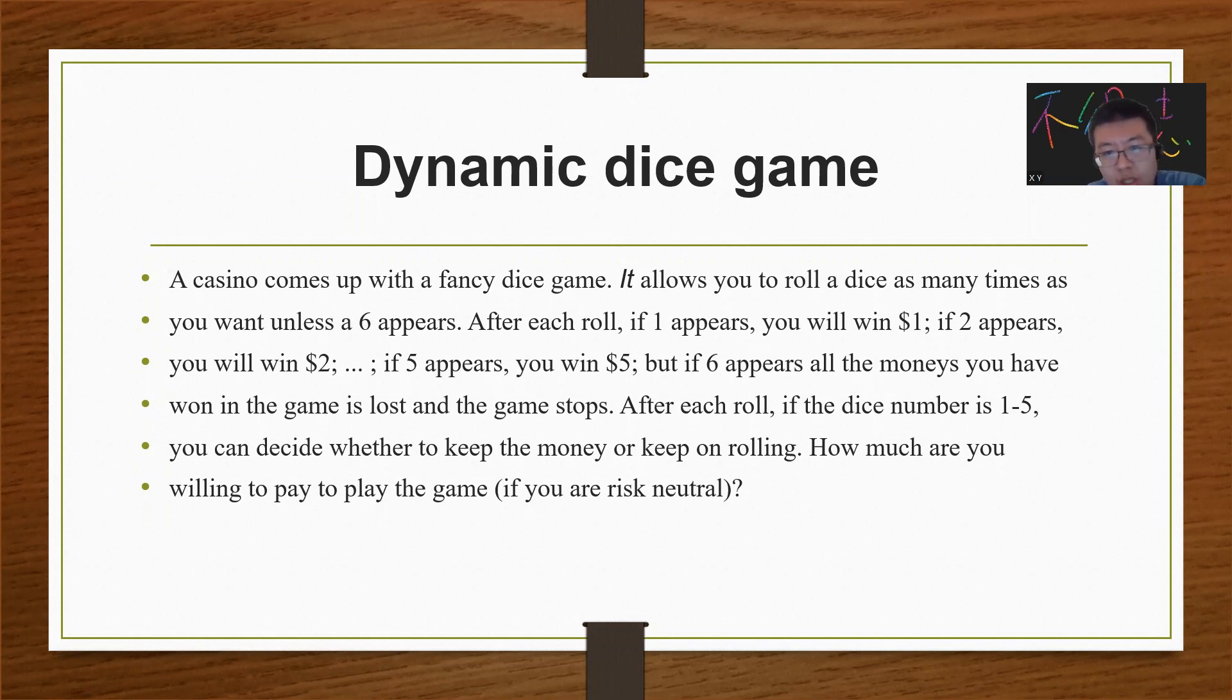If 5 appears you win $5, but if 6 appears all the money you won in the game is lost and the game stops. Whoever sees a 6, you're done. After each roll, if the dice shows 1 to 5, you can decide whether to keep the money or keep rolling. The problem is: how much are you willing to pay to play this game?